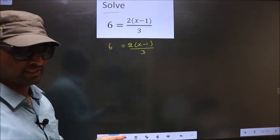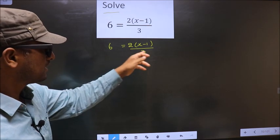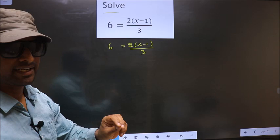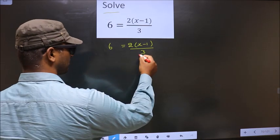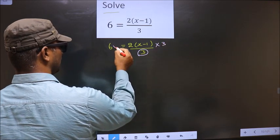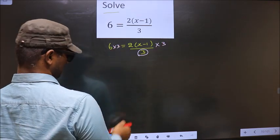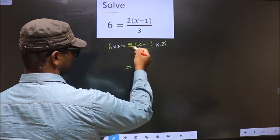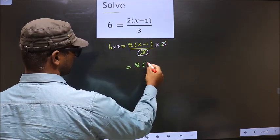Now for this equation, first we should remove the denominator, that is 3. So to remove this denominator, we multiply by 3 on both sides. Now here it cancels out. You are left with 2 times x minus 1, and here 6 into 3 is 18.